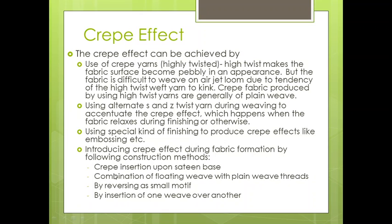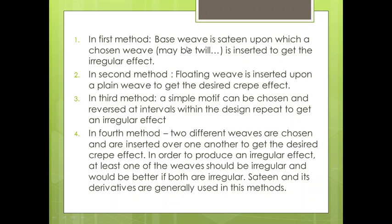In the first construction method, the base weave is satin, and it is combined with another weave such as twill, as per the requirement, to get an irregular effect. In the second method, plain weave is combined with a floating weave. The base is plain weave, upon which another weave — satin or twill — is combined to get the desired crepe effect.